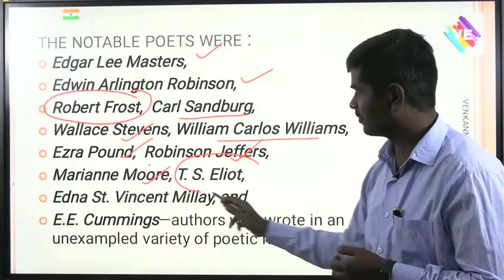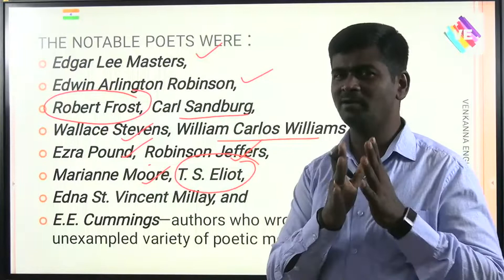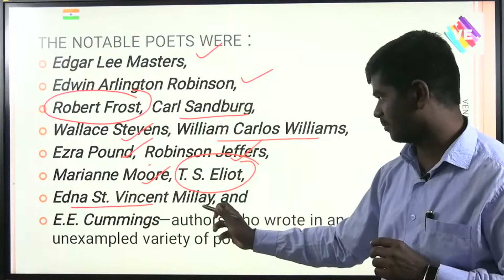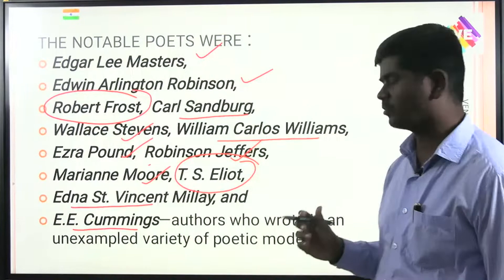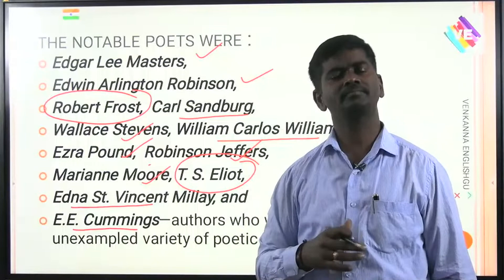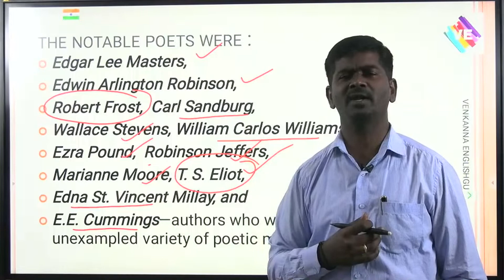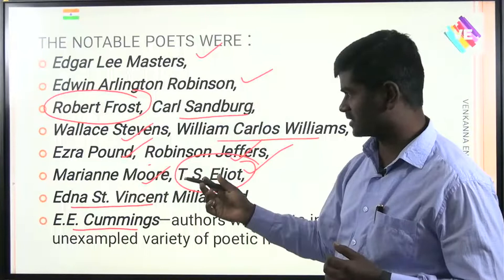T.S. Eliot is a very important American writer, born in 1888 in Mississippi. Other significant poets include Edna St. Vincent Millay and E.E. Cummings — authors who wrote in an unexampled variety of poetic modes. T.S. Eliot's poetry, like 'The Waste Land,' talked about a wide range of issues.